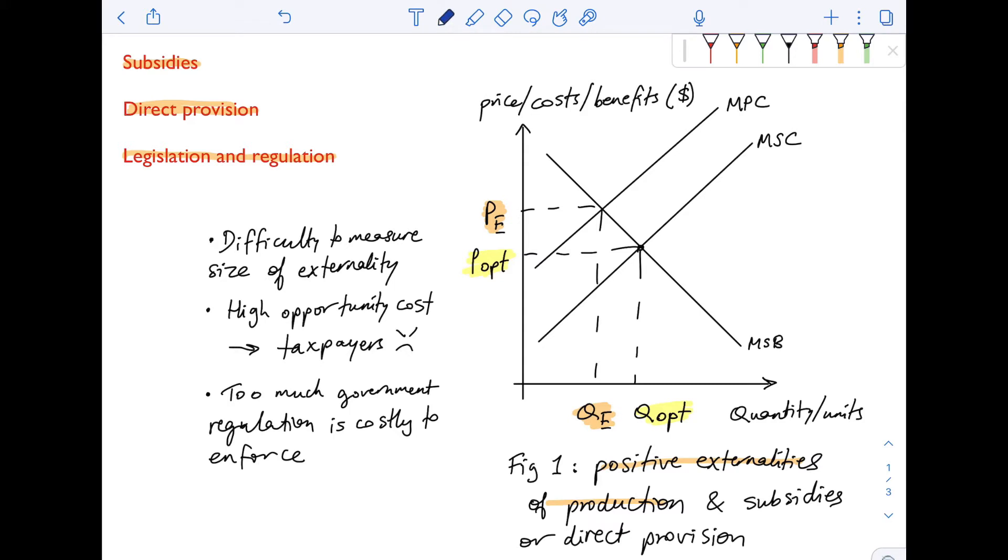So let's assume the government grants a subsidy or enters the market through direct provision. This will increase the market supply and so the MPC curve will shift to the right to MPC2. This will basically bring the price down from PE to P2 and increase the quantity in the market from QE to Q2.